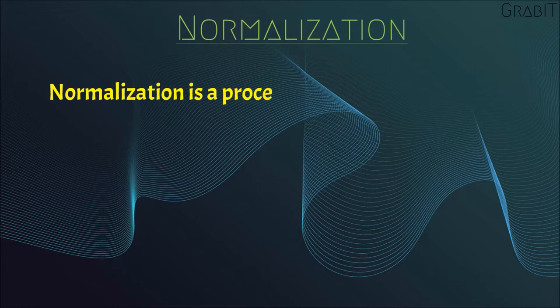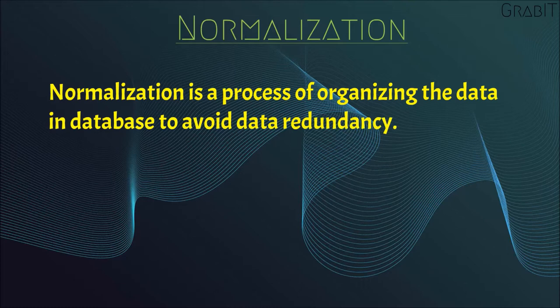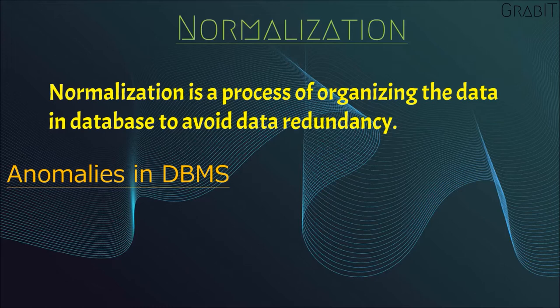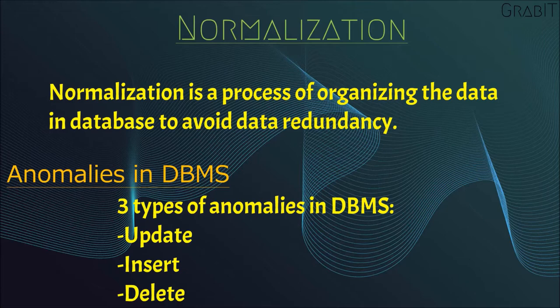Normalization is a process of organizing the data in a database to avoid data redundancy. Anomalies are problems that can occur in poorly planned databases. There are three types of anomalies that occur when the database is not normalized.